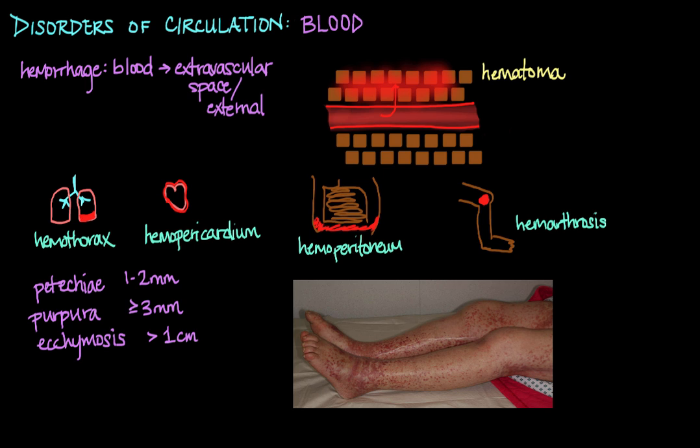And then finally, one last thing to go over is the evolution of an ecchymosis or a bruise. If you've ever noticed, bruises tend to change color over time, and that is due to the metabolism of the blood that has leaked into the extravascular space. So initially, when you see the red-blue, sort of purplish color of a bruise, that is mainly due to hemoglobin.